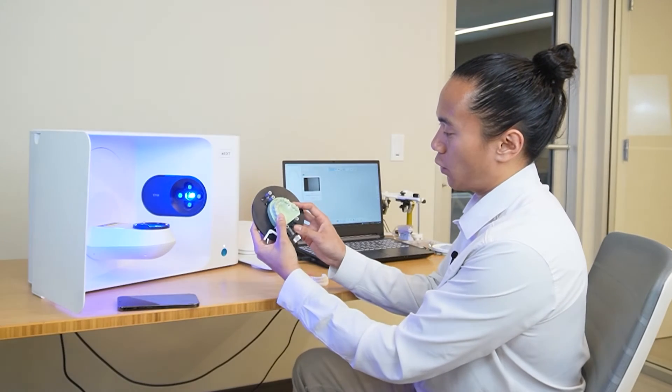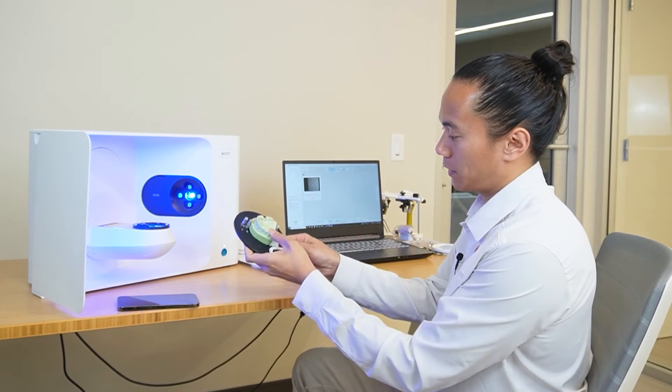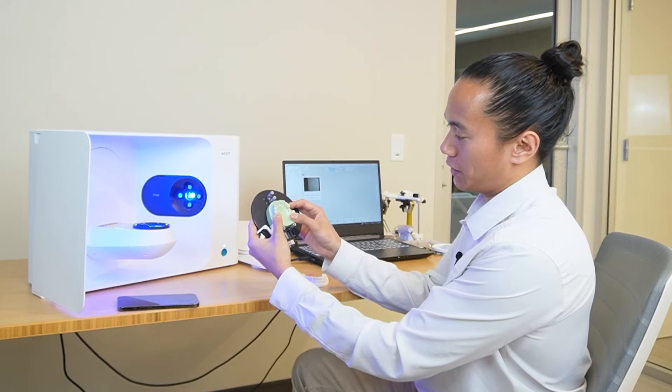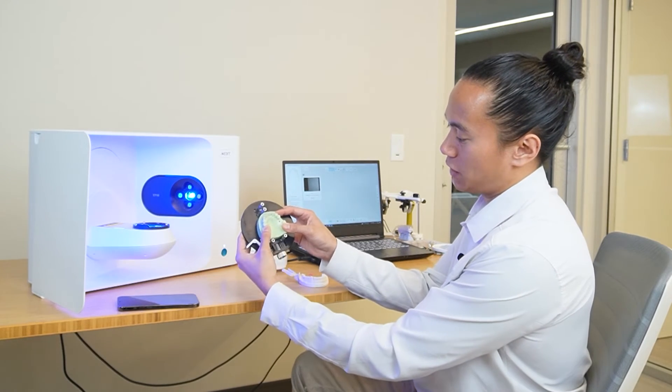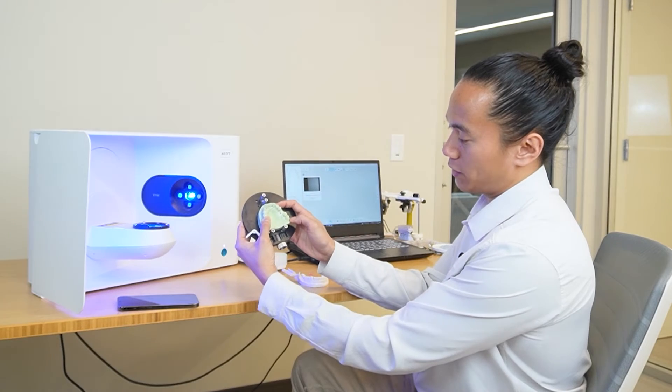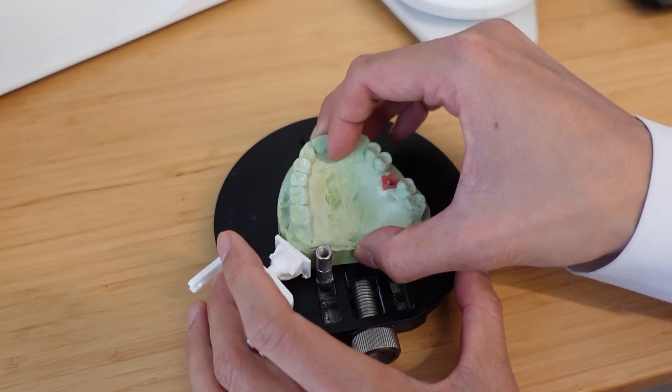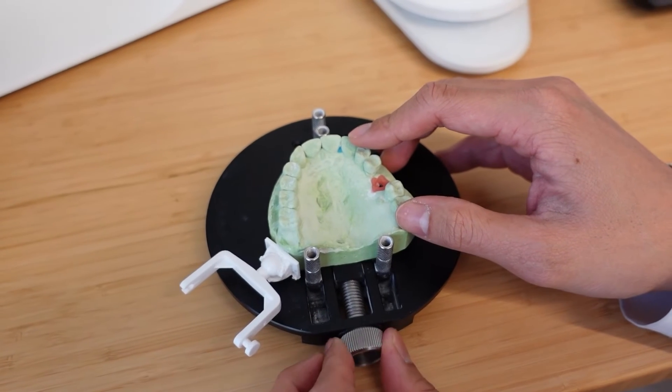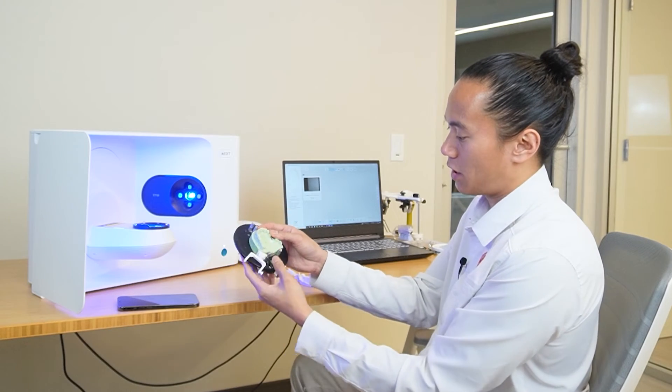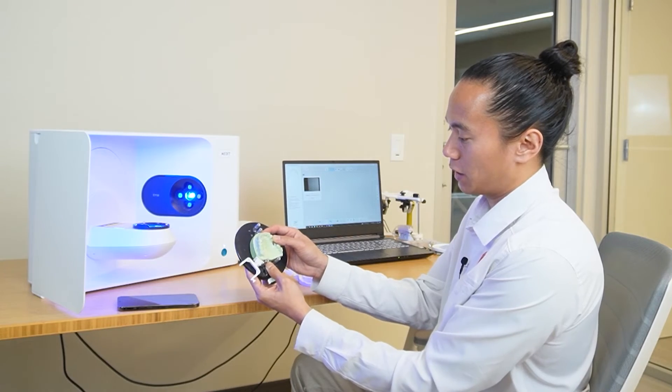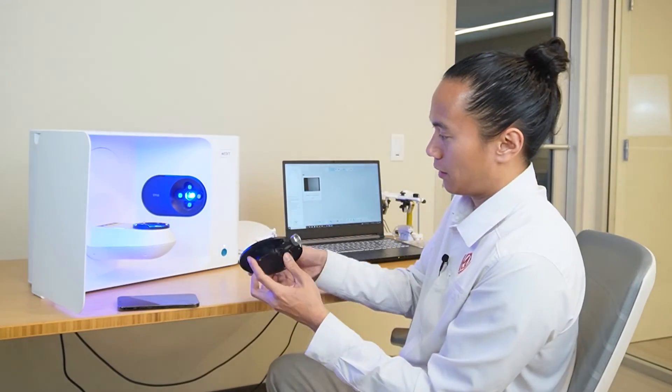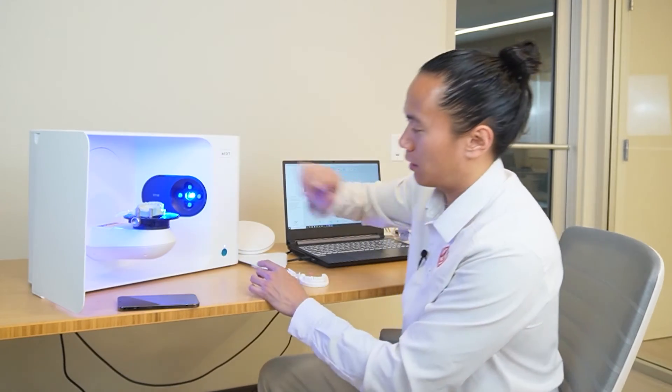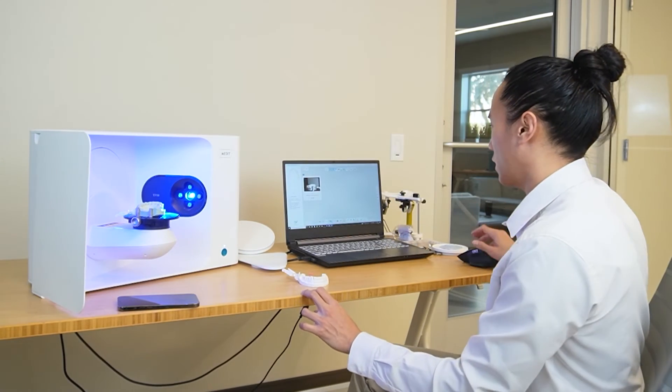Now when screwing in your model into the clamp, just make sure. Usually we like to have the anterior set towards the front of the stage and the two pins towards the posterior section here. And we'll slowly tighten up just like this. Again, as long as everything feels stable, you're good to go.